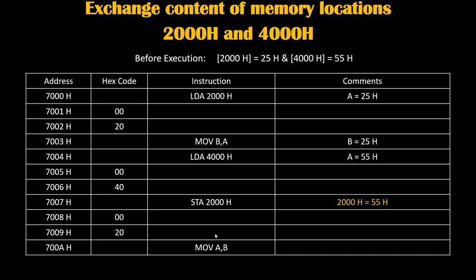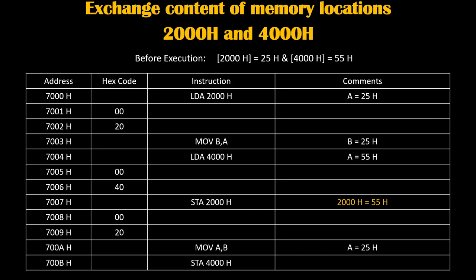Then we will write instruction MOV A,B. Because of this, the value of the B register will get transferred inside the accumulator. The backup value was 25h, so that will get transferred into the accumulator, and the new value of the accumulator will become 25h. Now we will transfer this to 4000h by writing STA 4000h. So whatever the accumulator was holding — 25h — will get transferred to 4000h. Therefore 4000h will become 25h, and we have successfully transferred 25h to 4000h.